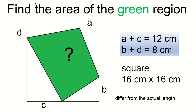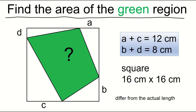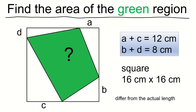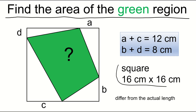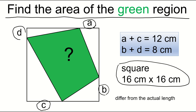Welcome to my channel. Today's problem is: find the area of the green region. This problem is similar to the previous videos — please check them after watching this video. It is a square with each side 16 centimeters. A plus C equals 12 centimeters. B plus D equals 8 centimeters. How do you solve this problem?